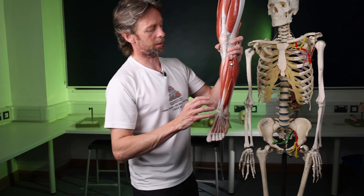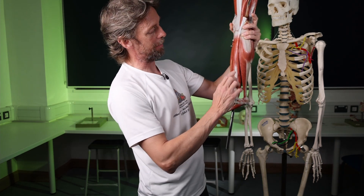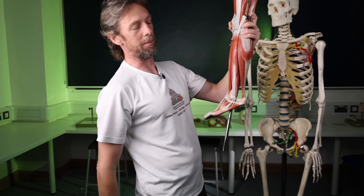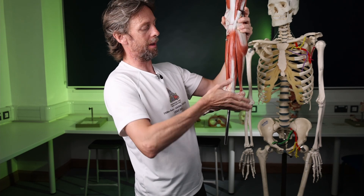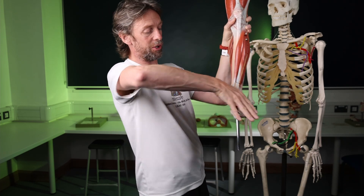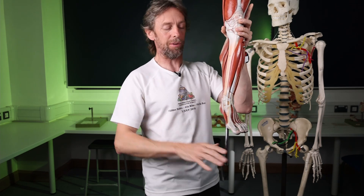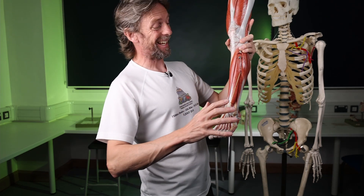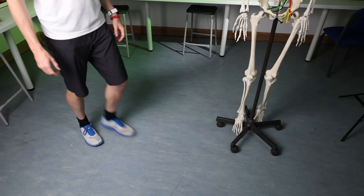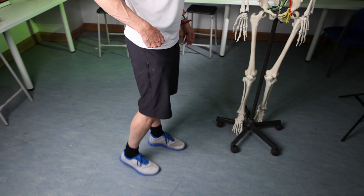If it's the common fibular nerve that's been injured, it also means the lateral compartment muscles won't be working well. These are involved in eversion — pulling the foot outward. Tibialis anterior is involved in inversion. So the inversion and eversion of the foot and balancing upon the foot will also be less effective.